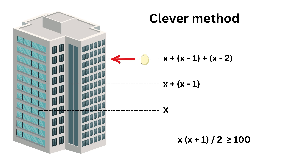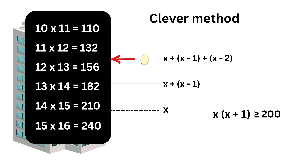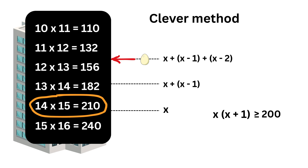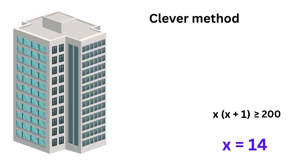We know that this sum can be simplified to X times (X plus one) divided by two, and it must be greater than or equal to 100. This means X times (X plus one) must be greater than or equal to 200. Looking at the values: for X equals 13, 13 times 14 is 182, which is less than 200. But for X equals 14, we get 14 times 15, which is 210 — that's more than 200. So X equals 14 is the minimum value we need. If we follow this method and start from floor 14, in the worst case we'll need only 14 drops at most.